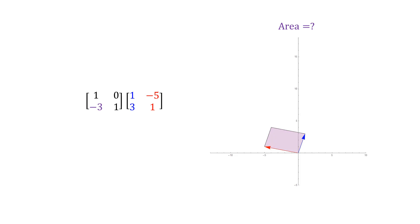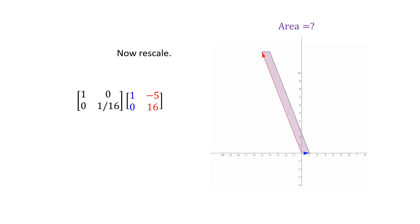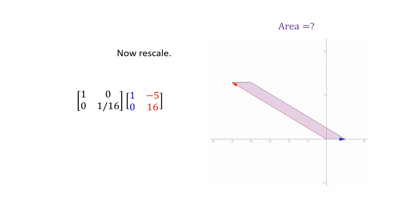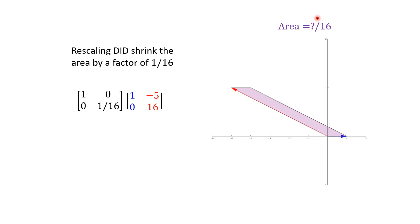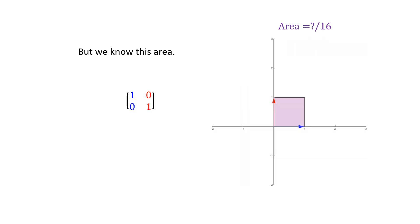So after pivoting below the 1, we get a new matrix whose determinant is the same as before. When we rescale by a factor of 1/16, this does change the area — this isn't a pivot operation, this is a scaling operation, so it changed the area by a factor of 1/16. Finally, we can pivot away the negative 5 using another shear transformation. But we know the area of this transformation: it's the identity transformation, and the determinant is 1.